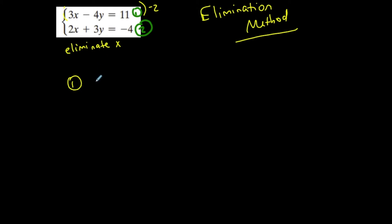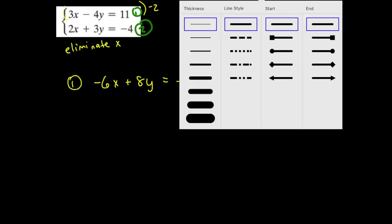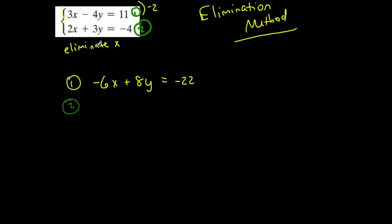So now equation 1 is going to become negative 6x plus 8y is equal to negative 22. And equation 2, I need to create a positive 6 in front of x. So I'm going to multiply it by 3.